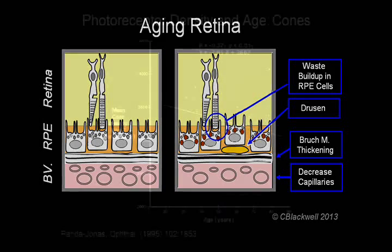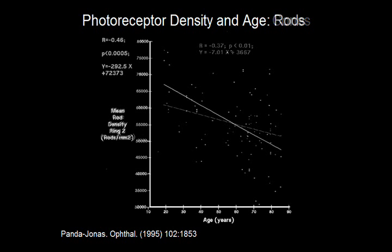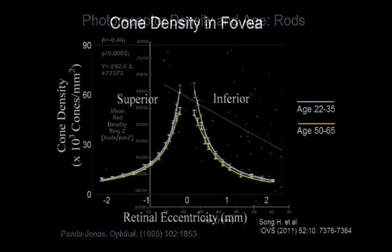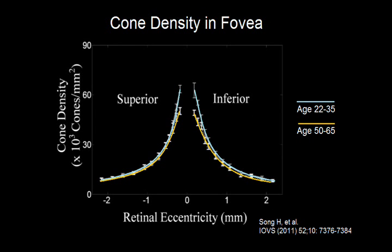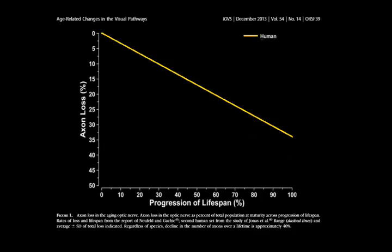Do we lose photoreceptors with normal aging? Study results differ. One says consistent loss of rods and cones. Another says cones are mostly preserved, but rods are lost. Some loss probably happens from normal aging, and more loss can be added by diseases like macular degeneration. The number of nerve fibers — that is, axons — in the optic nerve also declines with time, and we will cover that a little later.